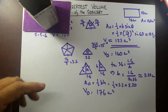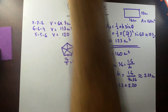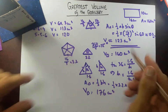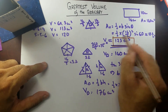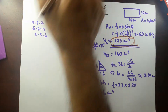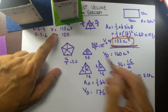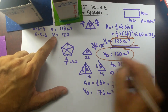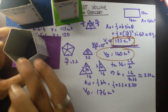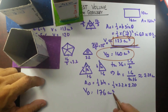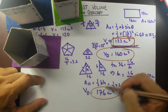So what does this tell us? If we have a triangular base prism, the volume is 123 cubic cm. A square base prism gives 160 cubic cm. A regular pentagon gives 176 cubic cm. So the volume is increasing as the number of sides increases.